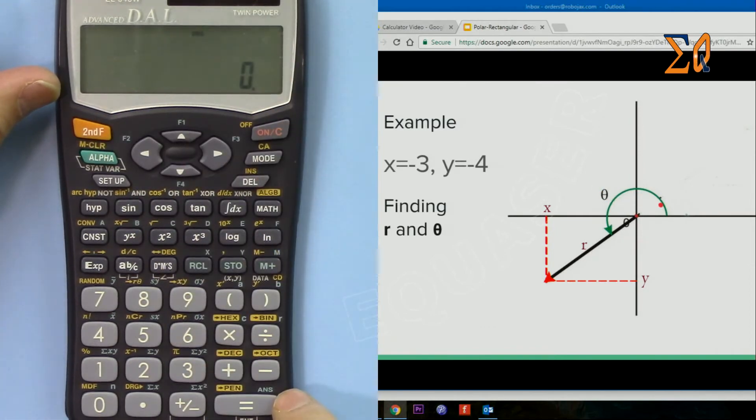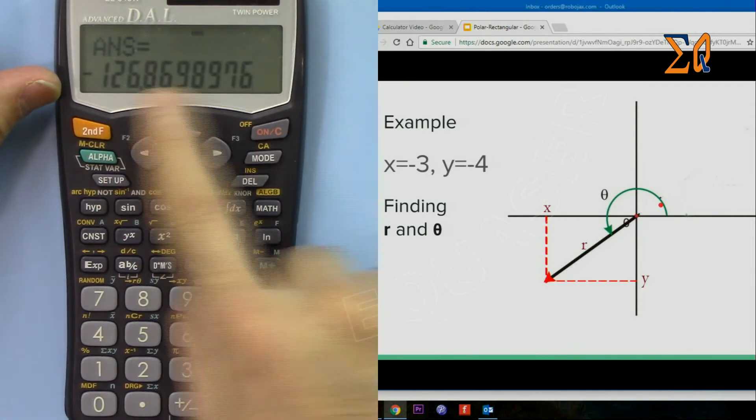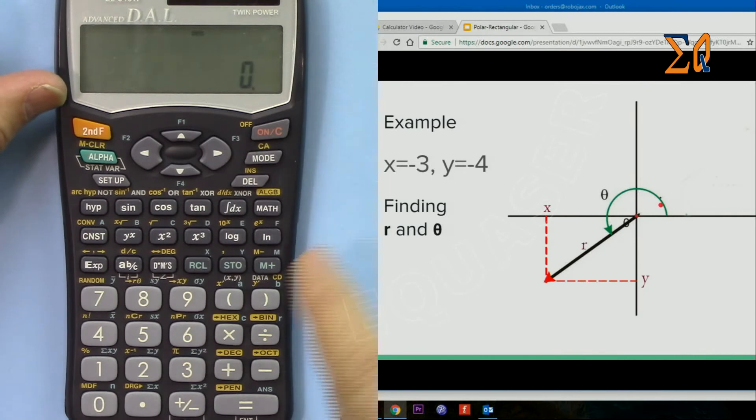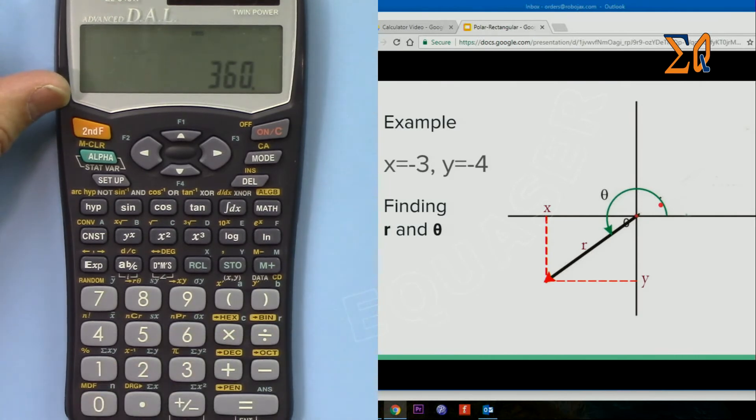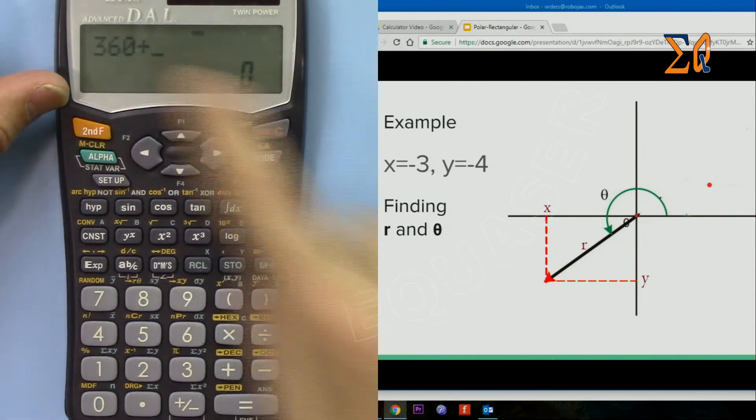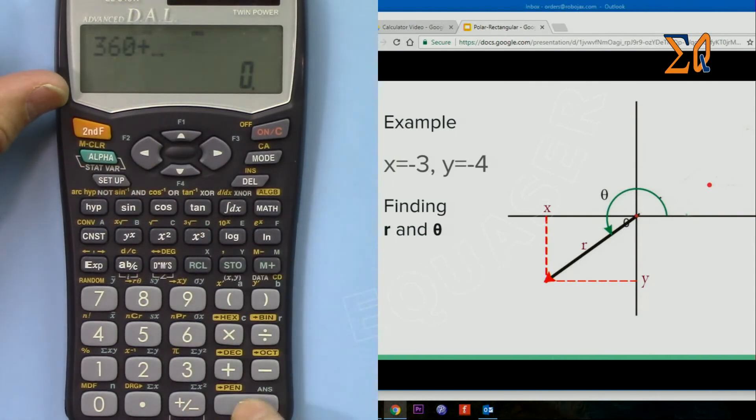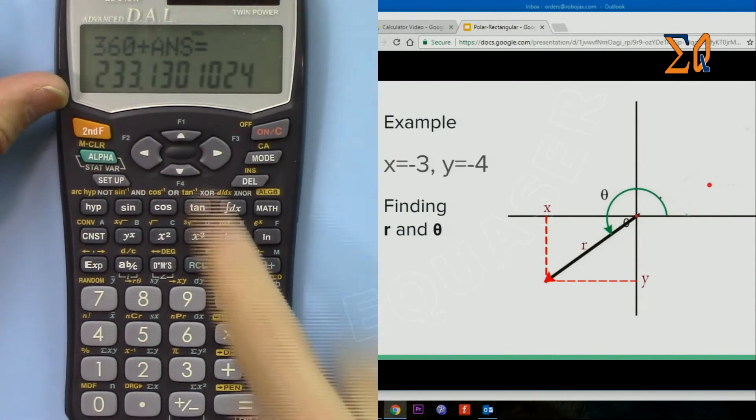So the value is there. Now 360 plus, because the value is negative, I'm using plus, and then alpha answer. So it will give me 233 from that direction.